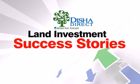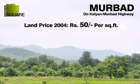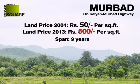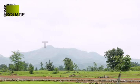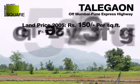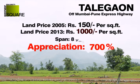Disha Direct is a name renowned for transforming land investment into success stories. Disha Direct discovered Murbad in 2004, a picturesque county near Kalyan, and by 2013 — in a span of nine years — Murbad was on everybody's mind, recording a property appreciation of 1000%. In 2005, Disha Direct chose Tala Kaan, which earned itself a reputation as the best destination to own a second home, with property prices appreciating by 700% in a span of eight years.